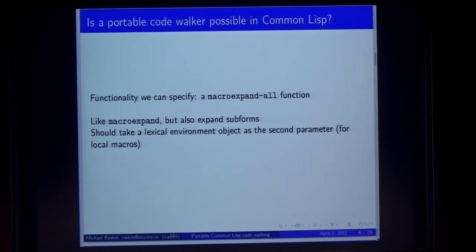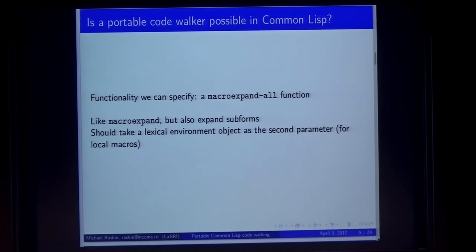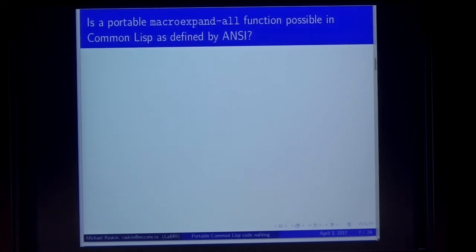We can define functionality in a macroexpand-all function, and we can say that Common Lisp is defined by the ANSI standard. Macroexpand-all is recursive macroexpansion — it is like macroexpand, but it also expands in all the subforms, all the macro invocations deeper in the form. It should also take a lexical environment object in the second parameter, because you may have local macros or local functions shadowing global macros. That is the functionality we call a code walker enough. So, is a portable macroexpand-all function possible in Common Lisp as defined by the ANSI Common Lisp standard? Well, it's a headline and it ends in a question mark.